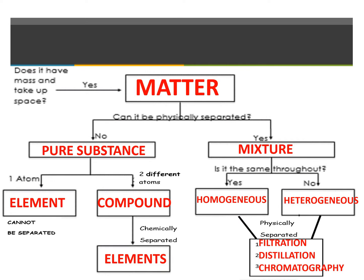If we look at matter and it can be physically separated, then it's considered a mixture. If the mixture looks the same throughout — meaning you cannot tell that there are other things in there — you're going to be considered a homogeneous mixture. If you can see that there are different components that make up the mixture, then it's going to be called a heterogeneous mixture. Whether you're homogeneous or heterogeneous, you can be physically separated by filtration, distillation, or chromatography.